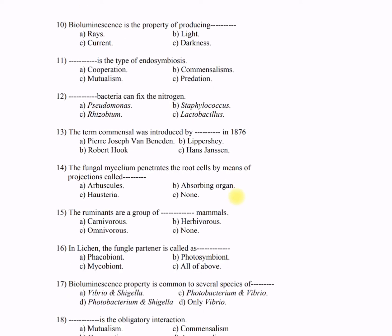Question 10: Bioluminescence is the property of producing dash — A) rays, B) light, C) current, D) darkness. The correct option is B — light. Bioluminescence is the light produced by chemical reactions in living organisms.